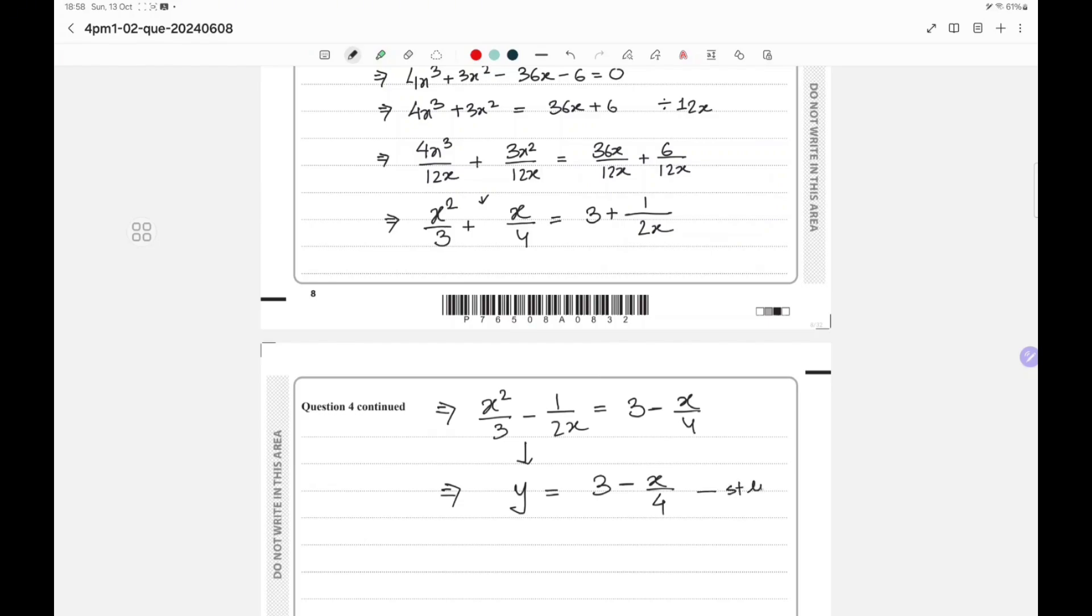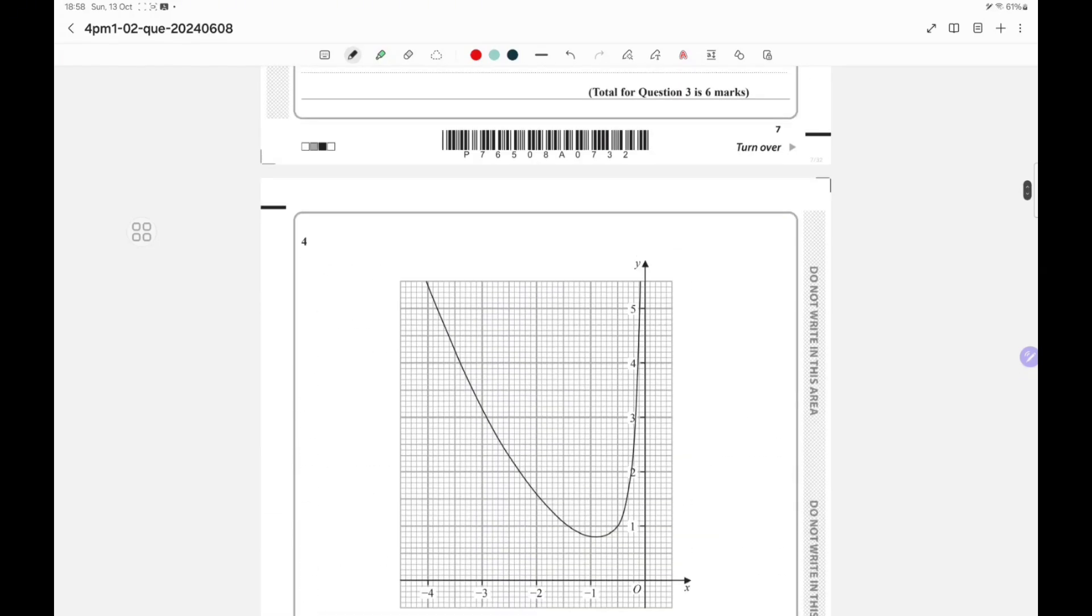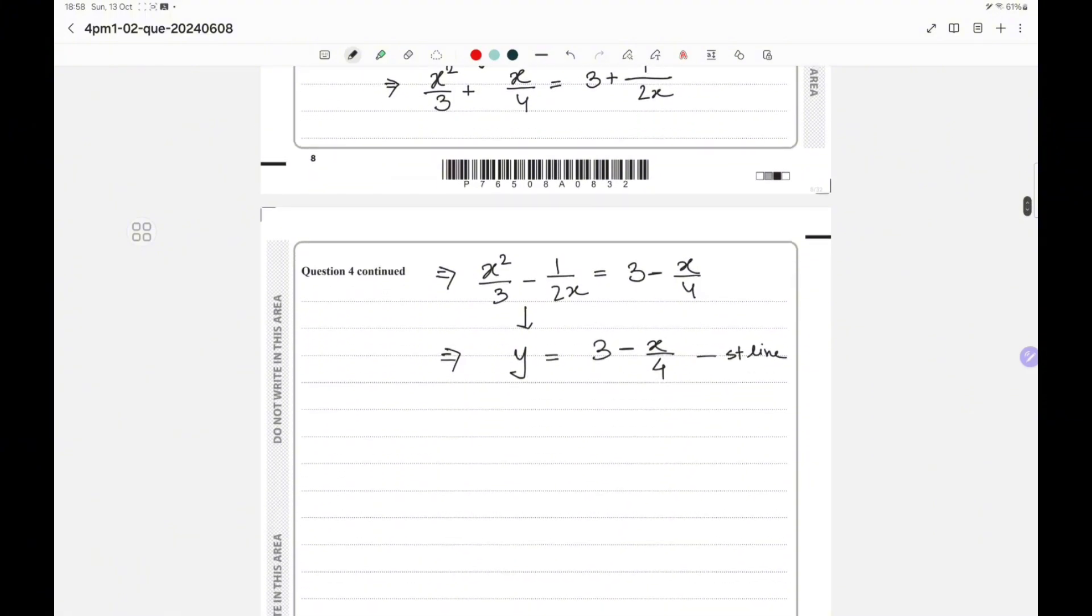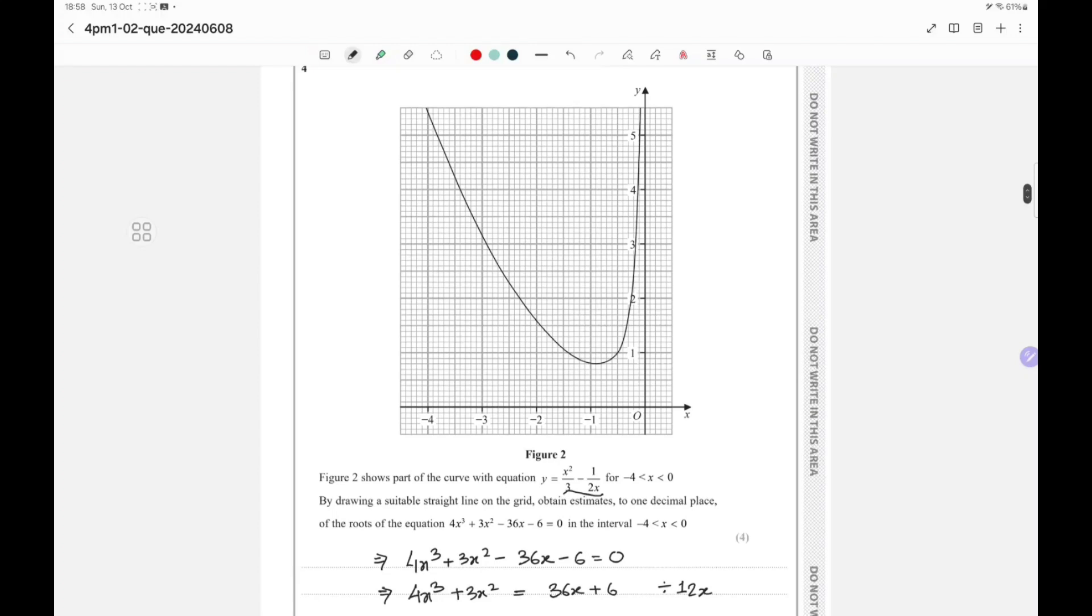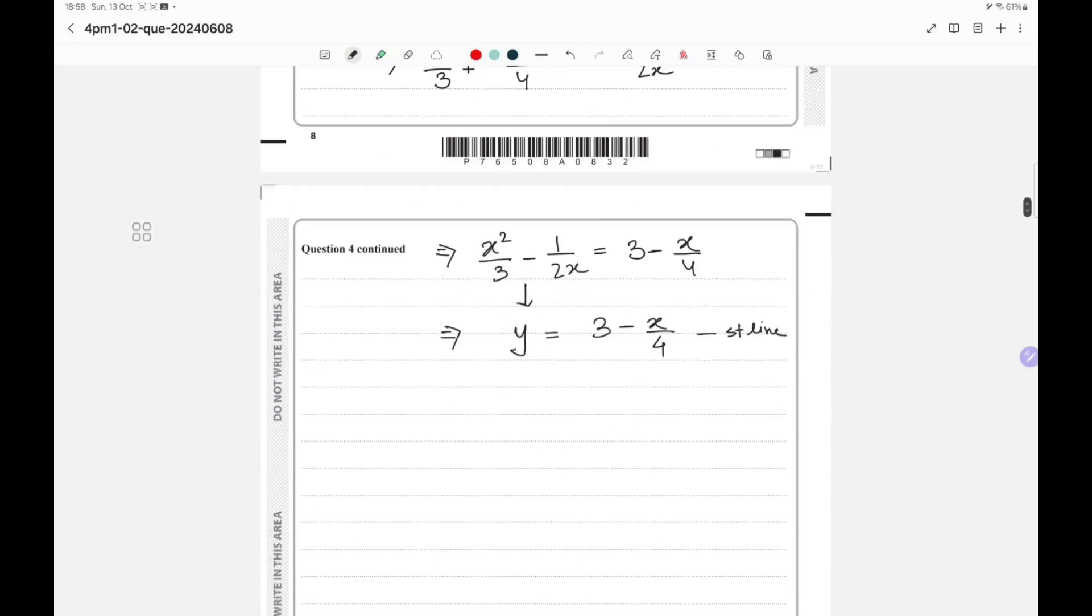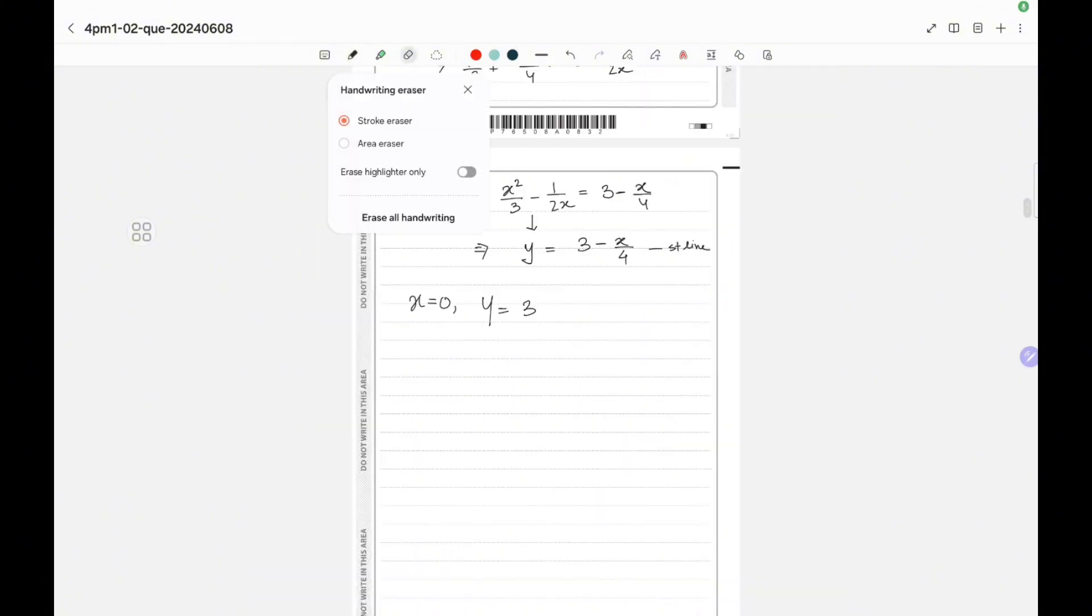So let's draw the straight line. Let's get two points over here. What's the value when x is minus 4? Let's say we are going to put the value of x equals minus 4.